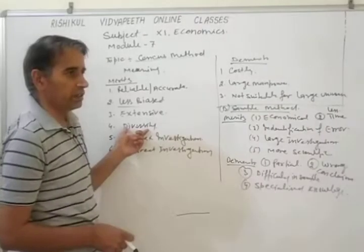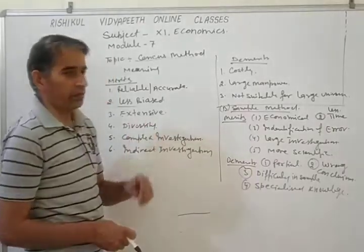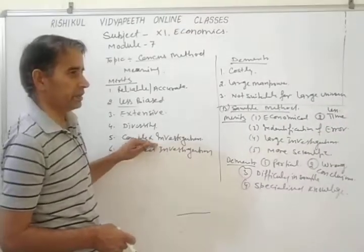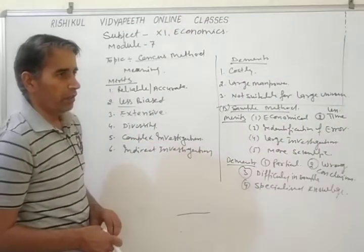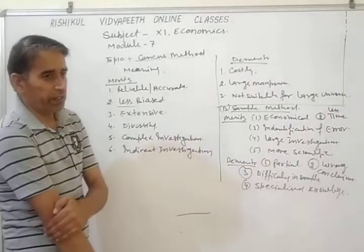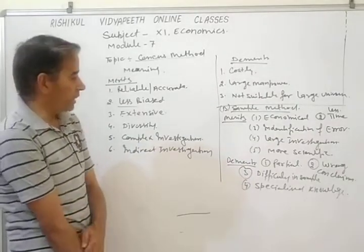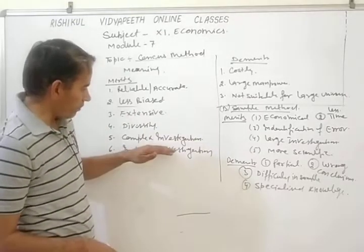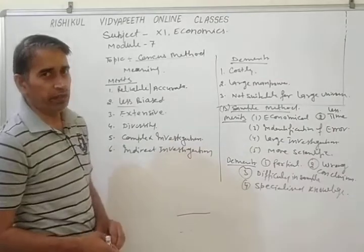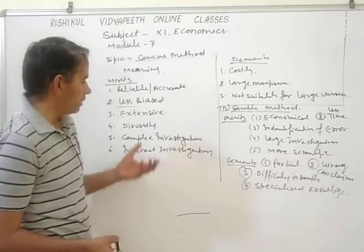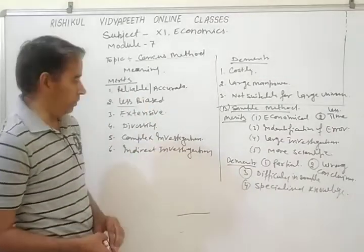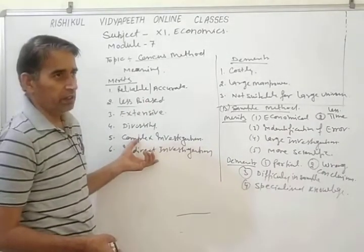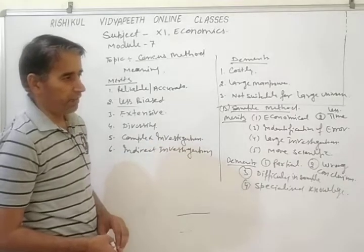Next is diversity. This method also has the characteristic of diversity, meaning different information or different attributes are included in this method. Next is complex investigation. When the study of a particular event is complex, the sample method may not be suitable. In that case, the census method is very much suitable and helpful for complex investigations.